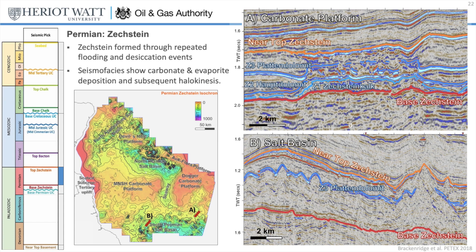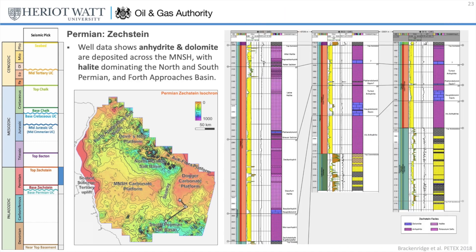Moving up to the Permian Zechstein now. The isochron thickness map clearly shows evidence of salt movement in the north and south Permian and Forth Approaches basins, confirmed in the seismic section shown bottom right. Elsewhere, the seismic shows evidence for carbonate ramp and build-up morphologies, as seen in the top seismic section where three events of carbonate growth can be seen. Looking at the well data, the existence of carbonates is confirmed, with isochron thins showing dolomites and anhydrites, and isochron thicks showing halite accumulation. The isochron map therefore feeds into a seismic facies map as shown here.